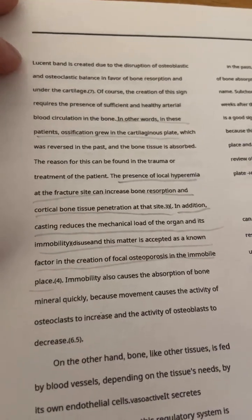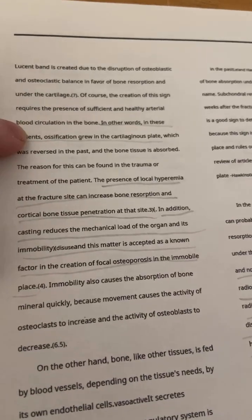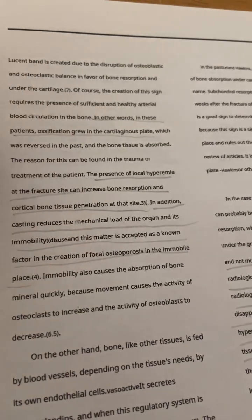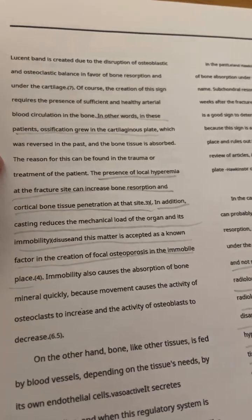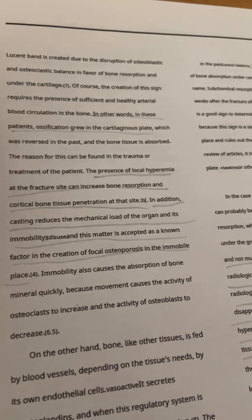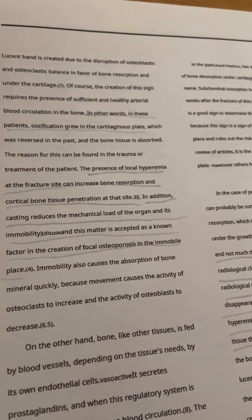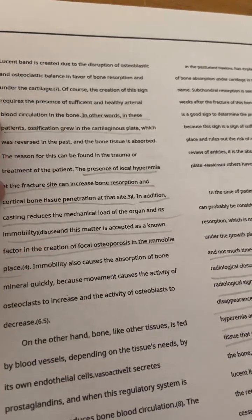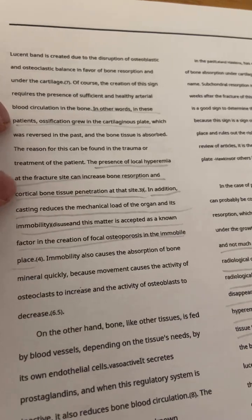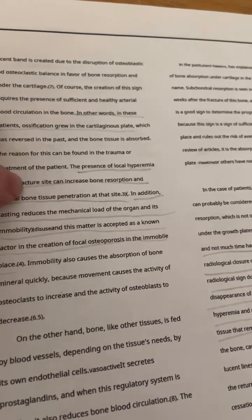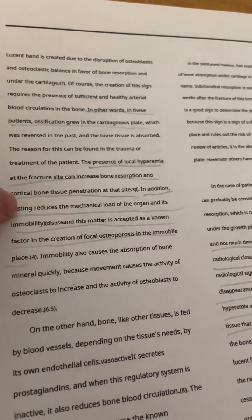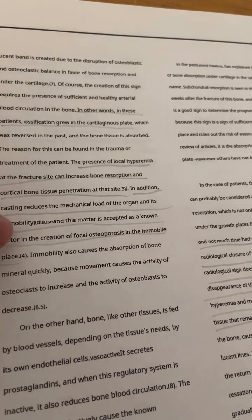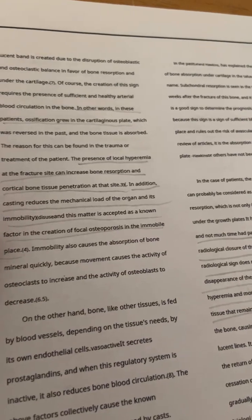Here's the conclusion of the paper. In these patients, ossification grew in the cartilaginous plate, which can be reversed and the bone tissue is reabsorbed. The reason for this is either the trauma, the fracture, or the treatment — was it the elevation of the bone, or was it the immobility that caused resorption? The presence of local hyperemia at the fracture site can increase bone resorption and cortical bone tissue penetration. In addition, casting reduces the mechanical load of the organ, and its immobility is accepted as a known factor in the creation of focal osteoporosis at the immobile place.